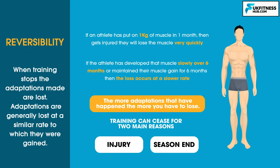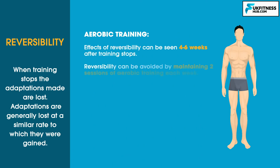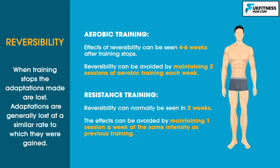Reversibility can be avoided by maintaining some level of fitness during the off-season or when injured. This is more problematic for an injured person, but can still be achieved by training the uninjured parts of the body whilst recovering. For aerobic training, the effects of reversibility can be seen 4–6 weeks after training stops, and can be avoided by maintaining two sessions of aerobic training each week. For resistance training, reversibility can normally be seen in two weeks, and the effects can be avoided by maintaining one session a week at the same intensity as previous training.